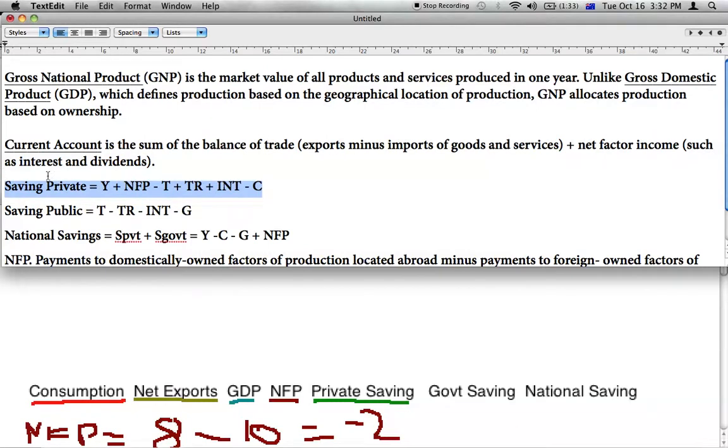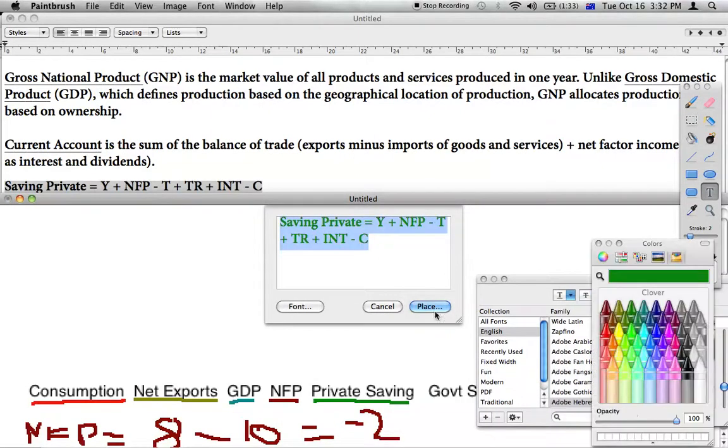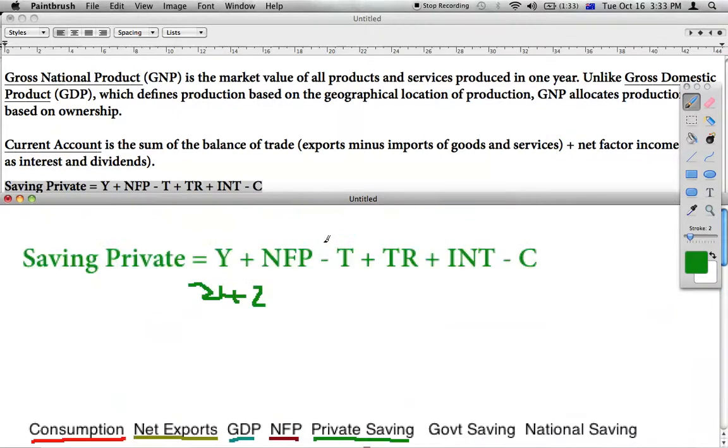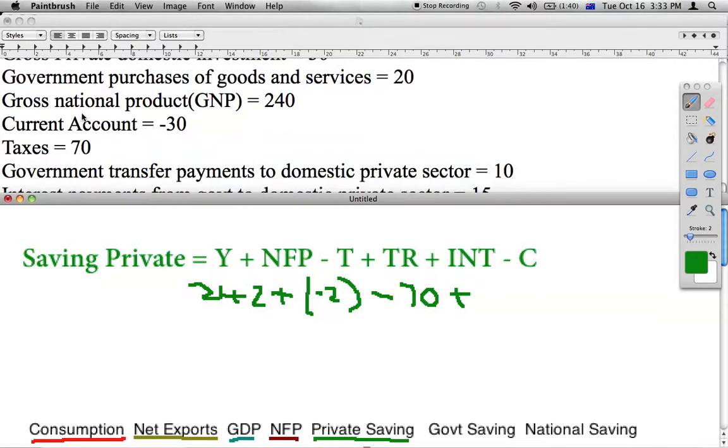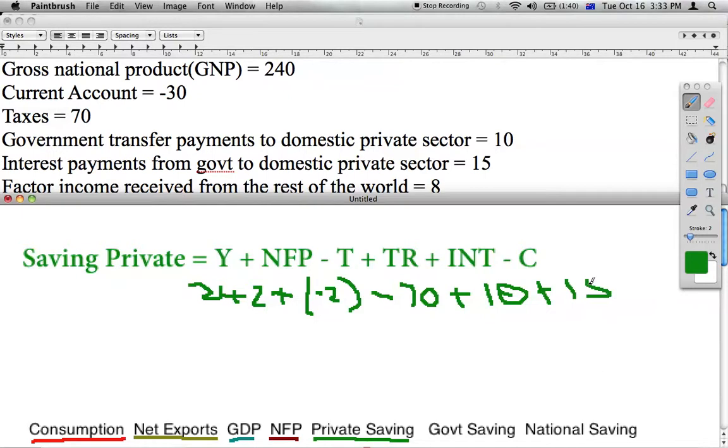We can actually just copy and paste this on, and then fill in the gaps. Y, which we got as 242. GDP, 242. Plus your net factor payments, we got as minus 2. Minus T, T standing for taxes. So if we look at the data, T is 70. Plus our transfer payments - transfer payments is 10, looking at the data. Plus our interest from the government - interest payments from the government is 15. Minus our consumption, which was 220.